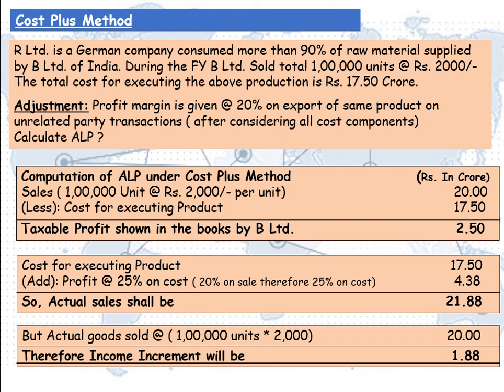The actual goods were sold at Rs 2,000 per unit, giving Rs 20 crores. Therefore, income will be incremented by Rs 1,88,00,000, and B Limited has to increase their sales by Rs 1,88,00,000 and pay tax on the same. To determine the arms length price, we added cost plus profit. Therefore, this method is called the Cost Plus Method.